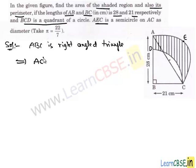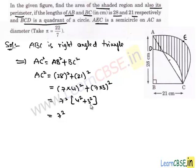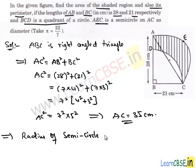To find the radius of the semicircle, we use the Pythagorean theorem: AC² = AB² + BC². We factorize: 28 = 7 × 4 and 21 = 7 × 3, so AC² = 7²(4² + 3²) = 49 × 25 = 49 × 5². Therefore AC = 7 × 5 = 35 cm. The radius of semicircle AEC is AC/2 = 35/2 cm.